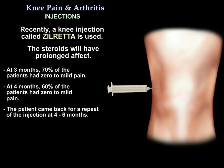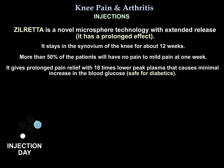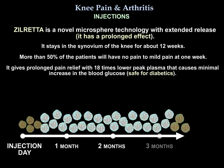Recently, a knee injection called Zilretta is used. The steroids will have a prolonged effect. At three months, 70% of patients had zero to mild pain. At four months, 60% of patients had zero to mild pain. Patients came back for a repeat injection between four to six months. Zilretta is a novel microsphere technology with extended release that stays in the synovium of the knee for about 12 weeks. More than 50% of patients will have no to mild pain at one week. It gives prolonged pain relief with 18 times lower peak plasma levels, which causes minimal increase in blood glucose, so it is safe for diabetics.